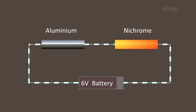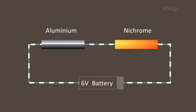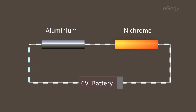The Nichrome wire heated up into red hot. Even if the same current is passing through the aluminum and Nichrome wires, the Nichrome wire heats more. What is the reason? This is due to the high resistance of the Nichrome wire.